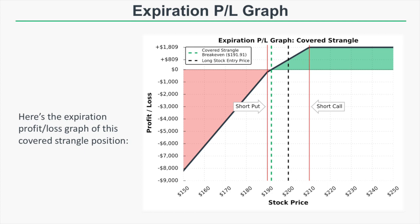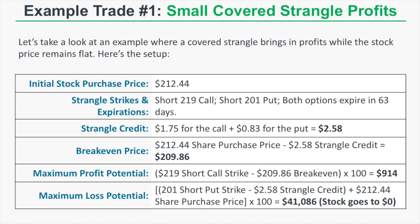This sums up that a covered strangle is a very bullish strategy. If the stock collapses, you have significant downside loss potential because you own 100 shares and are selling a put against that position — losses accelerate if assigned on the short put, leaving you long 200 shares. It has strong profit potential if the stock stays between the short strikes, but considerable downside risk from doubling up on bullish exposure.